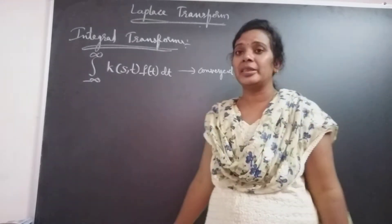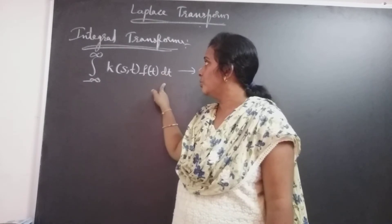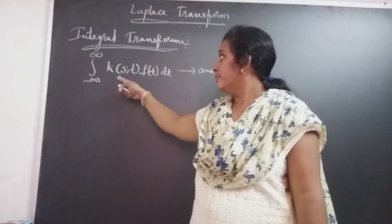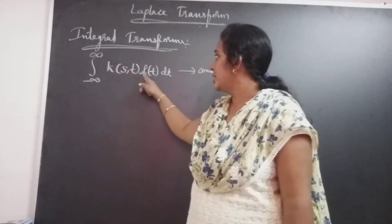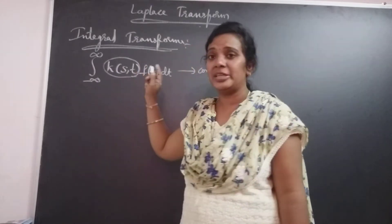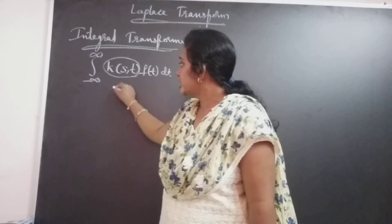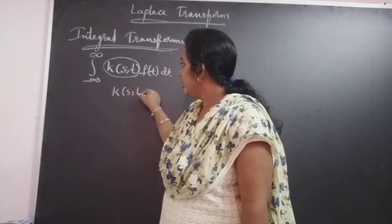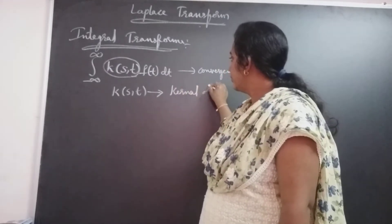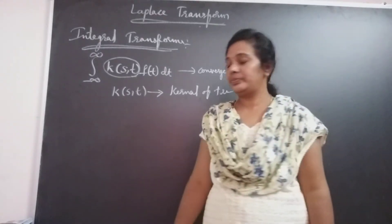Convergent means the integral limit value must be finite. Only in that case will the transform exist. Here, the integral from minus infinity to infinity of K(S, T) · F(T) dT — in this, K(S, T) is a function of two variables S and T, and K(S, T) is called the kernel of the transform.